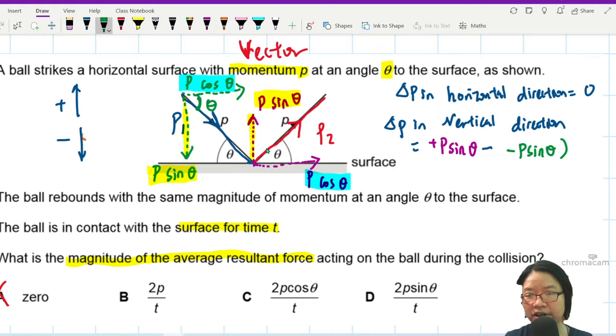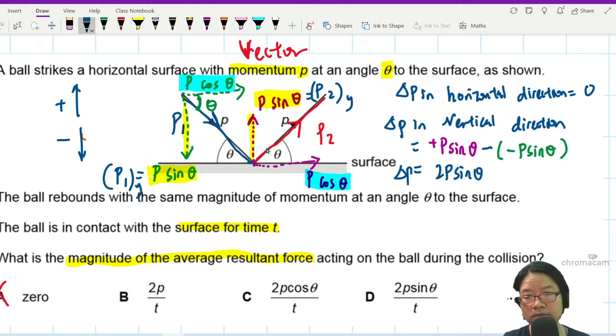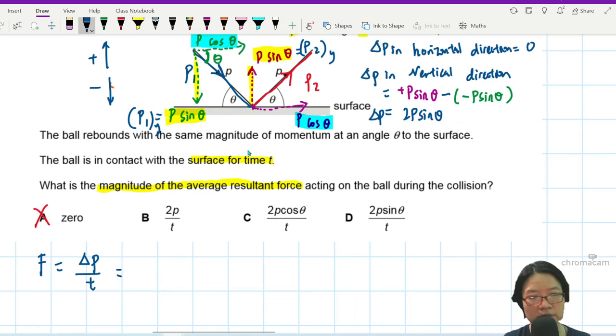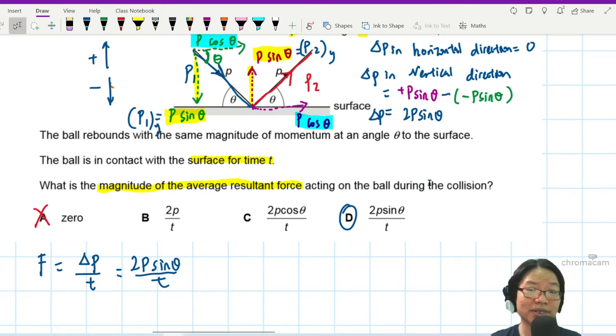So I'm just going to write here, this one is my initial p1 in the vertical direction. This is p2 in the vertical direction. So from here I will get p sin theta plus p sin theta, which is 2p sin theta. So now if you want to find the force, I can take change in momentum over time. So it will be 2p sin theta divided by t. The answer is D.